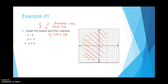Now I'm going to change my color and graph the next one: y is greater than or equal to negative 3. That's going to be along the y-axis, so I find negative 3 on the y-axis and put a point. We don't have any other terms to graph here. Since y is greater than or equal to negative 3, I'll draw a solid line because of the inequality sign. And if it's greater than, I'm going to be shading up.